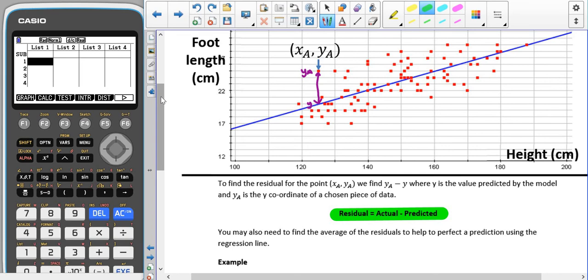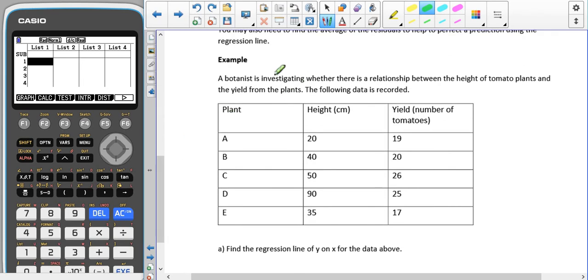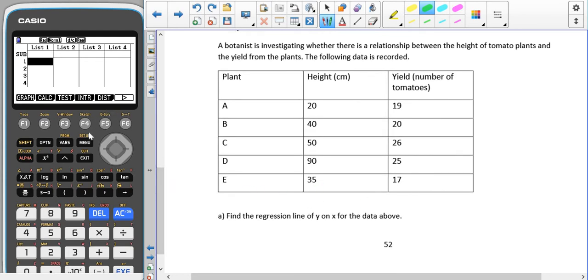Here's an example: A botanist is investigating whether there is a relationship between the height of tomato plants and the yield from the plants, and we have the following data which is recorded.